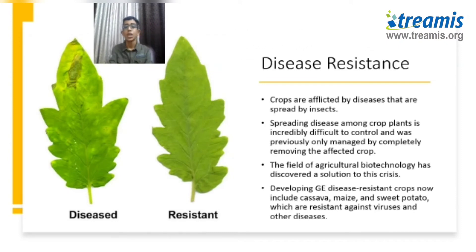Disease resistance — crops are affected by diseases that are spread by insects. The field of agricultural biotechnology has discovered a solution to this crisis. Cassava, maize, and others can be considered developing GE disease-resistant crops. This is because biotechnology has inserted genes into them which are resistant against viruses and other diseases.